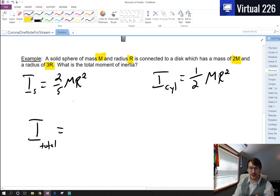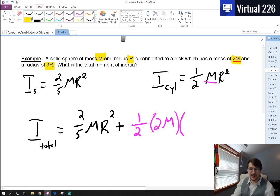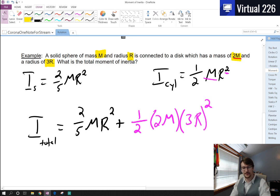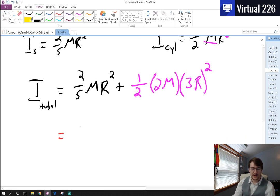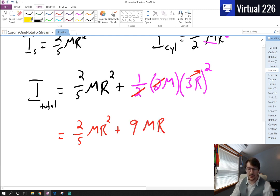For our sphere, we have two-fifths MR². When we add it to the cylinder, we have one-half, and our mass here is actually twice the mass of the sphere because it's 2M, and then our radius is 3R. We need to make sure we don't forget to square that quantity. This gives us two-fifths MR² plus - the one-half and the two divide out, and we square the three to get nine - so that's nine MR².